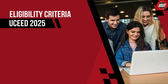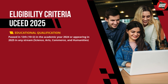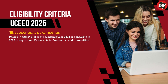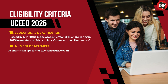Let's look at the eligibility criteria for UCED. Number 1: Educational qualification. A candidate should have appeared for grade 12 or equivalent examination for the first time in either 2024 or 2025 to be eligible for attempting UCED 2025. Students from all streams — science, commerce, arts and humanities — are eligible. Number of attempts: a candidate can attempt UCED a maximum of two times and that too in consecutive years. Note that the UCED score is valid for one year and only for admissions in the same corresponding academic year.